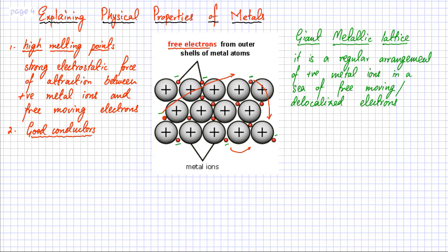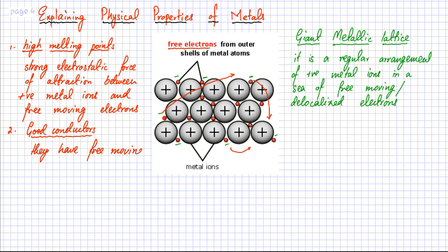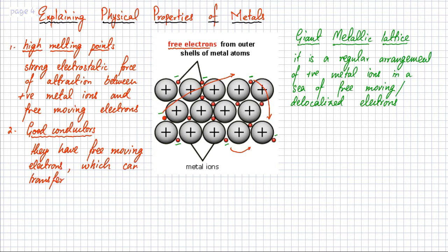They are very good at transferring energy from one side to the other because they are freely moving in all directions, which is why they are very good conductors of heat. They are also very good conductors of electricity because electricity is the movement of charges — the free electrons carry negative charge from one end to the other. The reason metals are such good conductors of heat and electricity is because they have free moving electrons which can transfer energy and charge very quickly.